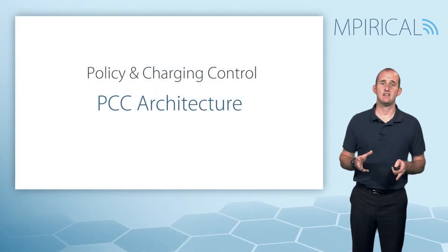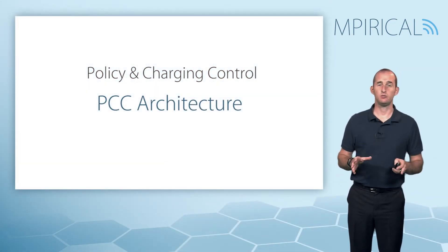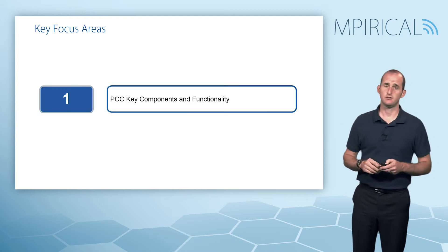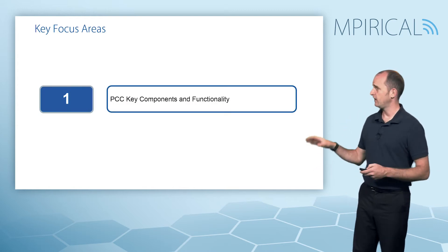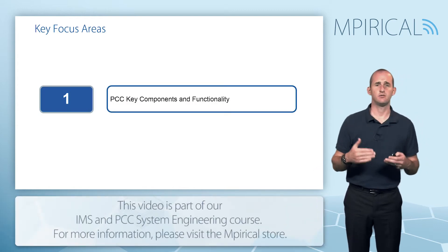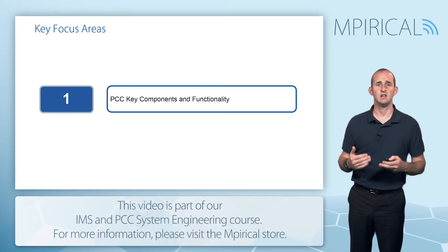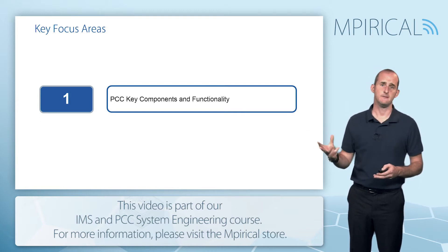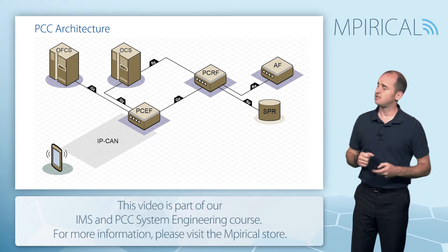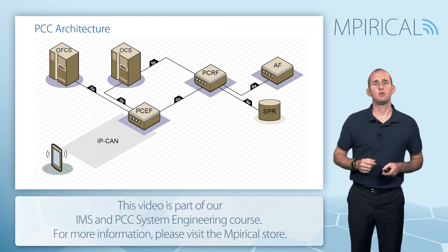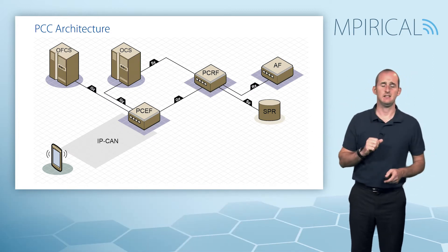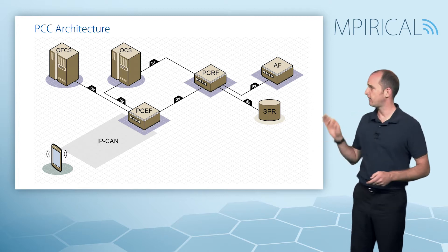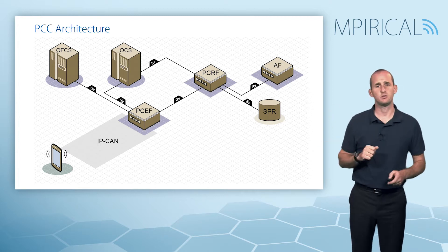In terms of the PCC architecture, we really only have one objective to cover off in this session, and that's just looking at the key components and functionality across the PCC domain. This is the map that we're going to use — it features all of the main entities and we'll take each one in turn, looking at their roles and responsibilities.